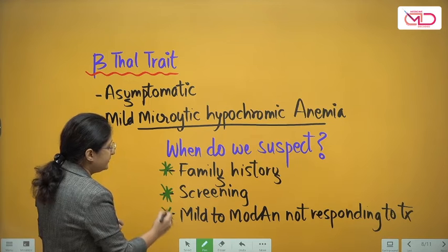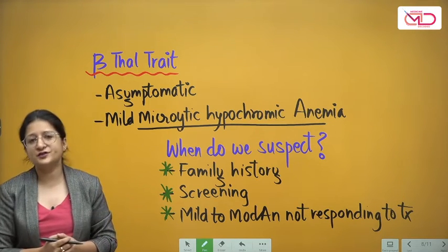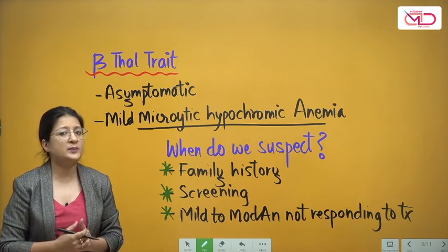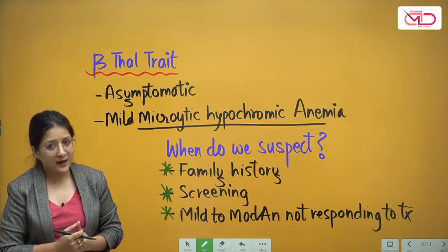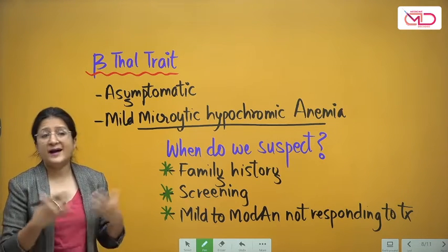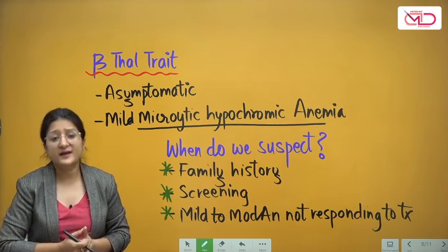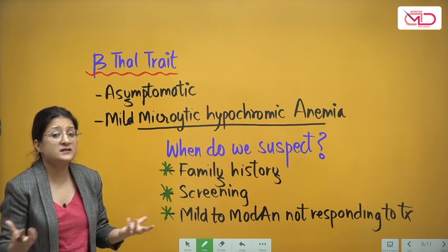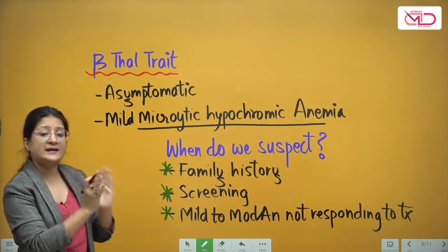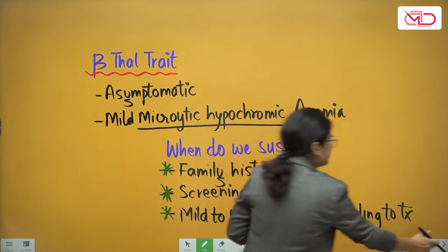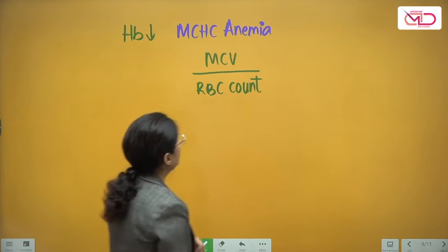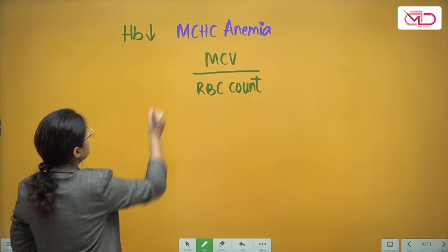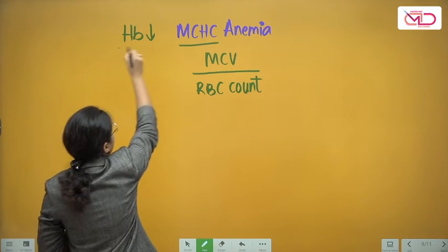Otherwise, mild to moderate anemia thought to be iron deficiency anemia that is somehow not responding to oral iron treatment would suggest some other diagnosis at play — it could be beta thal trait. Beta thal trait can give a confusing blood picture with iron deficiency anemia, and that is what we need to understand: how to differentiate between the two.